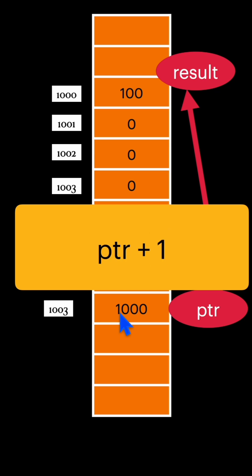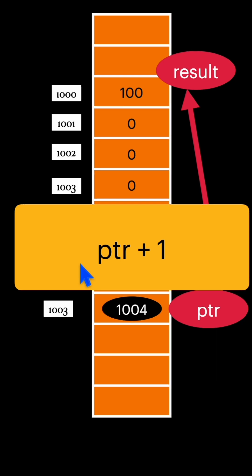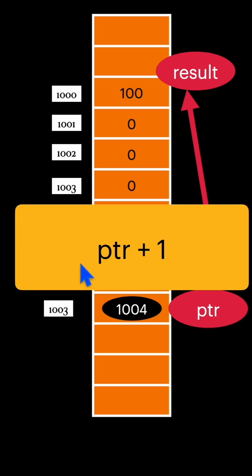You are incrementing the pointer, not the value. Since this is an integer pointer, now this pointer will give you the value of 1004, which is incremented by 4, and what is the size of integer? That is also 4, right. So this works for any kind of variable.